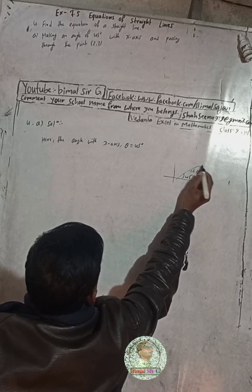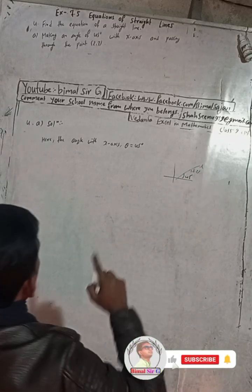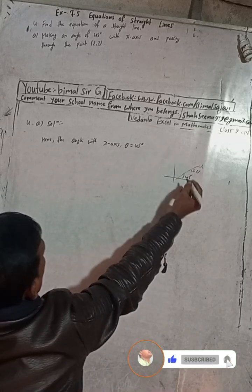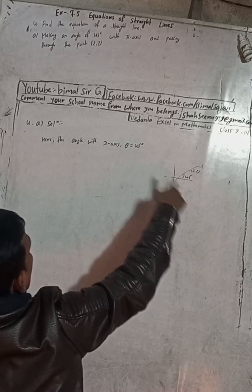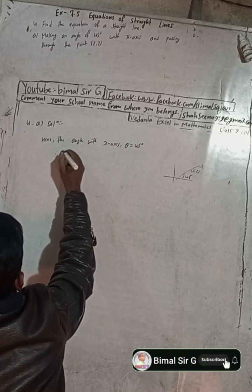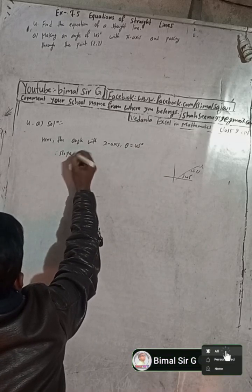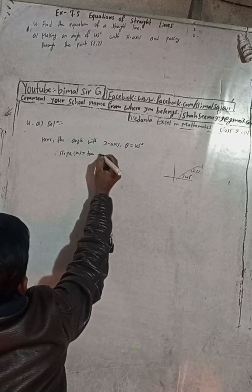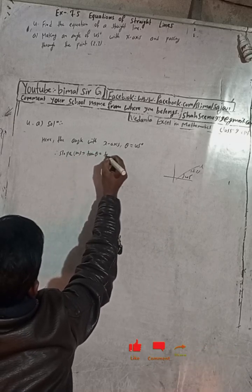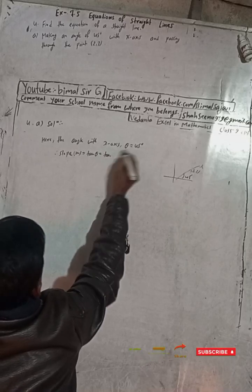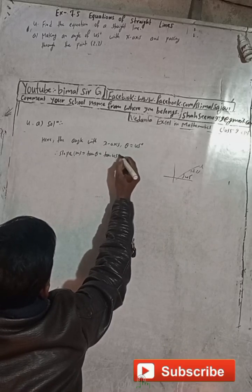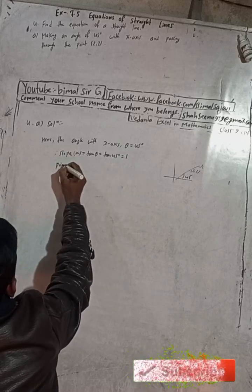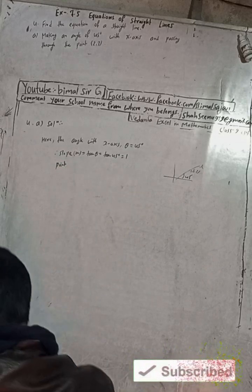We have to find this equation. The angle with the x-axis is in the positive direction, so this is 45 degrees. Therefore, slope m is equal to tan theta, and tan 45 degrees is equal to 1, so slope m equals 1.